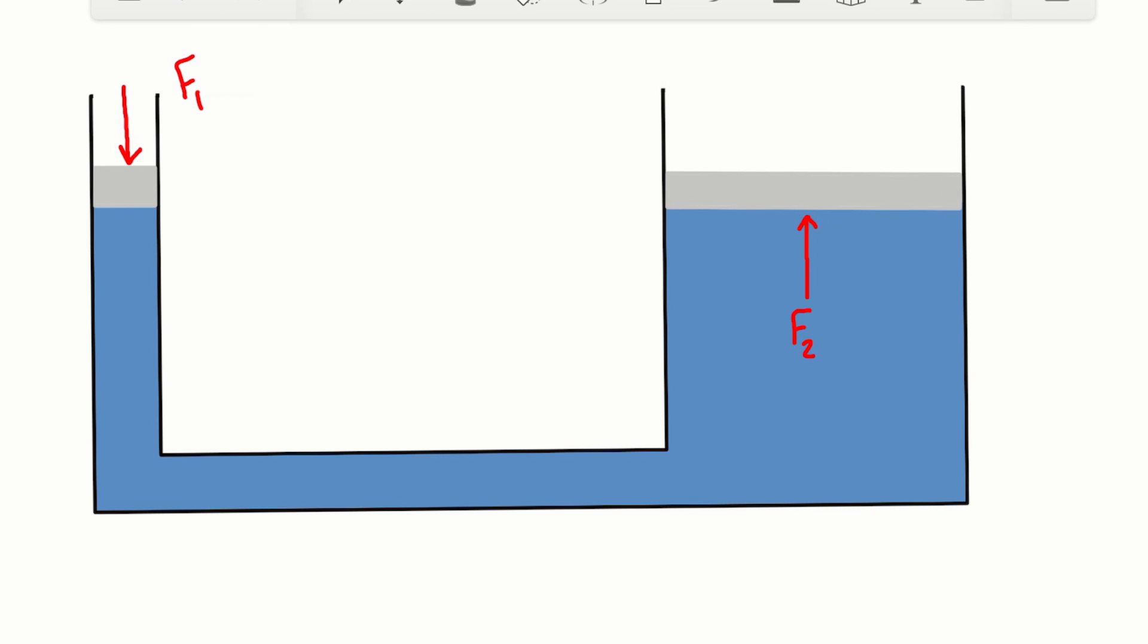So in order to figure out what the pressure is that we're causing, we need to know the surface area of the piston. So we're going to call the surface area here A1 and the surface area of the second piston A2.